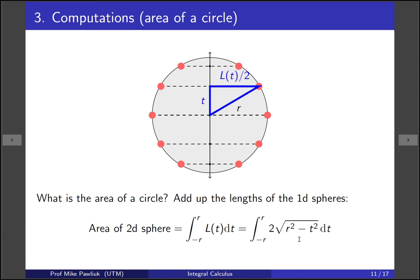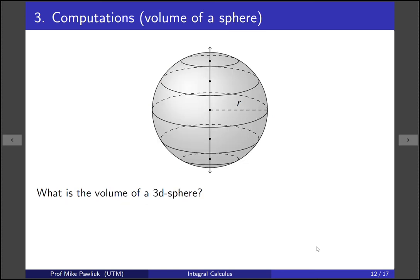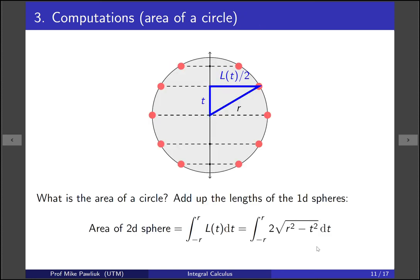So if you use Pythagoras, you'll get this square root of R² - T² right here. And then there are two of them, so that's multiplied by two. Now this integral right here is actually kind of tricky. And you need some tools from a little bit later on. You need something called trig substitutions to do it. So we'll actually come back to that a little bit later in the course.